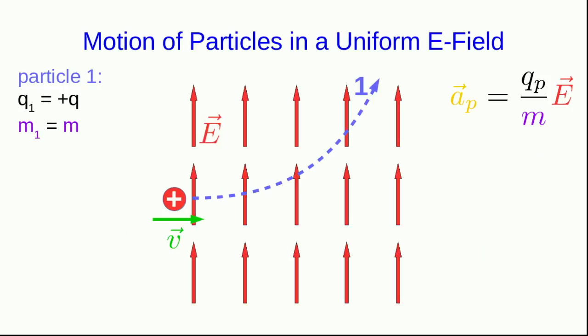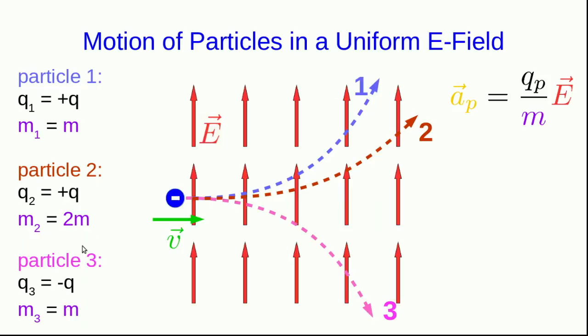So if we had a particle that enters a region of uniform E field with some velocity v, its path would curve. If it's a positively charged particle, then its path will curve in the direction of the E field. If we have another particle carrying the same charge, but with two times the inertia, its path is also going to curve in the direction of the field. However, because of that larger inertia, it's going to have a smaller acceleration, and so its path will be less curved. And finally, a negatively charged particle is going to have a path that curves in the opposite direction.